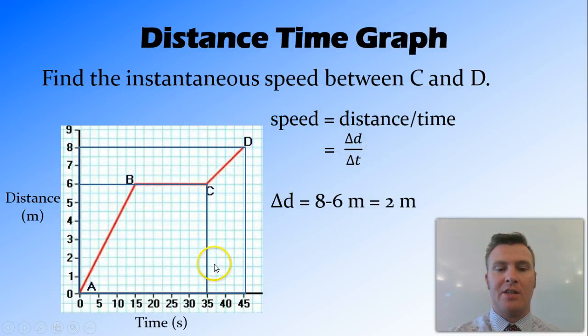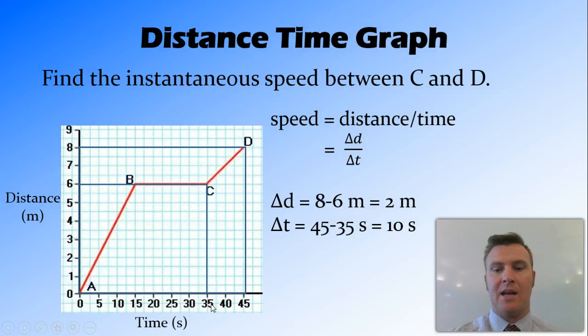And similarly, we can look at the change in time by going 45 minus 35 equals 10. So here, change in distance divided by change in time is 2 divided by 10 metres per second, or if we work it out, 0.2 metres per second.